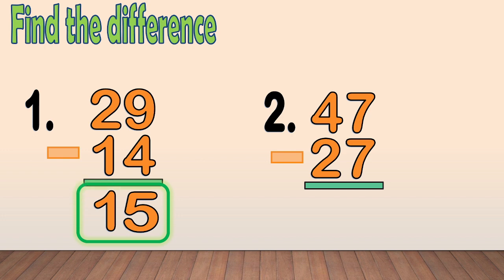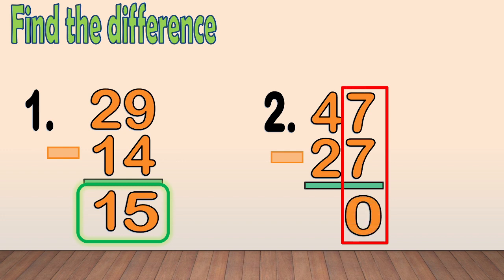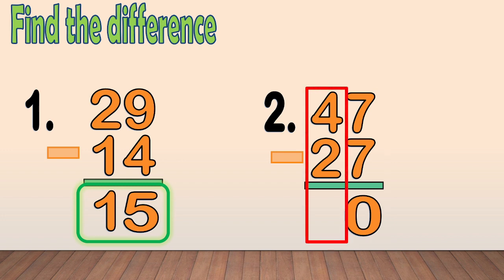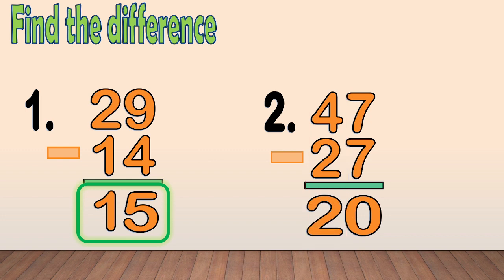Number 2: 47 minus 27. First, subtract the ones column. 7 minus 7 equals 0. Next, subtract the tens column. 4 minus 2 equals 2. Our final answer is 20.